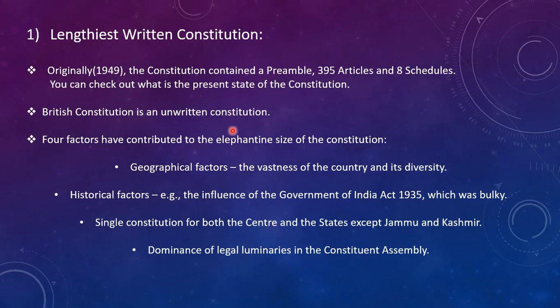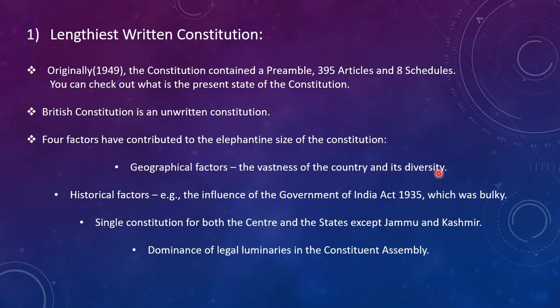The British constitution is an unwritten constitution — Britain's constitution is not a written constitution, they believe in an unwritten constitution. Four factors have contributed to the elephantine (large) size of the Indian Constitution. Number one is geographical factors — the vastness of the country and its diversity. As India is a very vast and diverse country, it was very important to reflect that diversity in the constitution, which made it considerably lengthy.